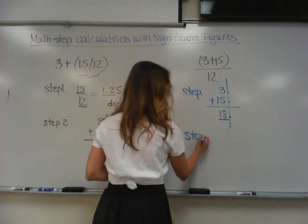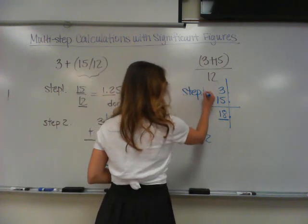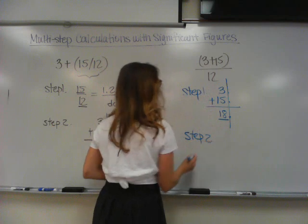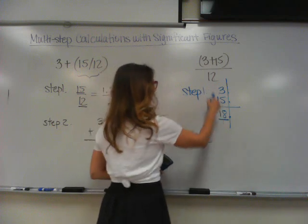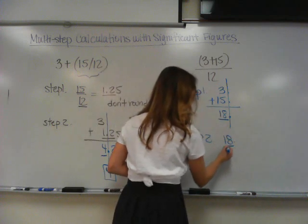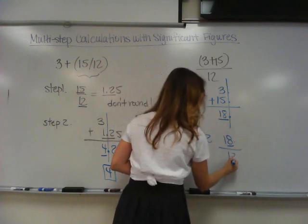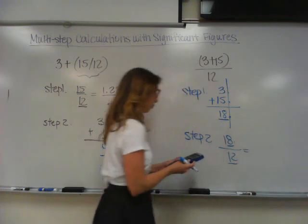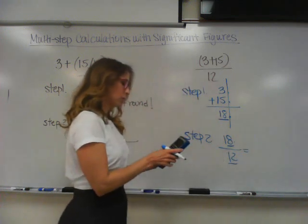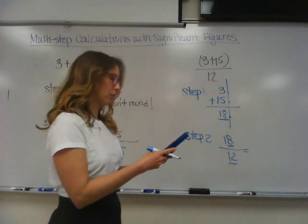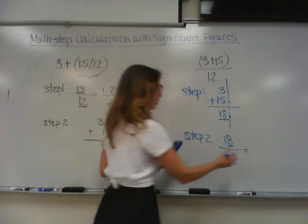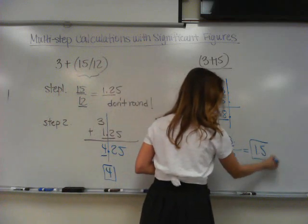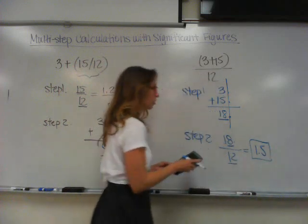Now step number 2: take 18 and divide it by 12. Don't each of these have two sig figs? So technically we're going to have two sig figs in our answer. You're going to get 1.5 — that's two sig figs. You are done.